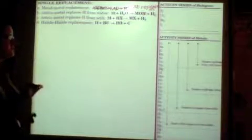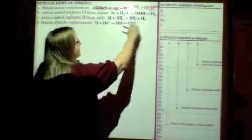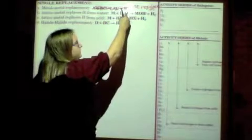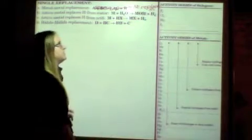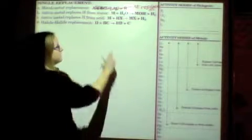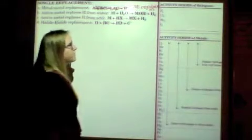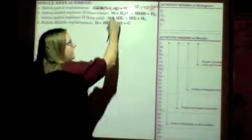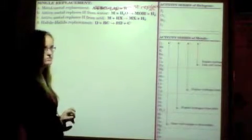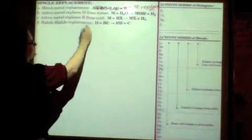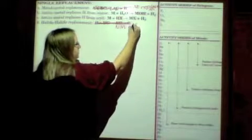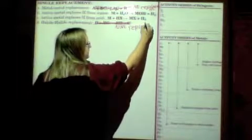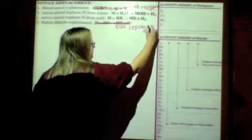B, just like decomposition, you're simply going to follow the guidelines. So if you have a metal reacting with water, it's going to form MOH plus H2 and replace the M. For C, same thing, M plus HX is going to produce MX plus H2. The X is any non-metal. And then this halide-halide replacement, again, don't worry about that. You just need to know that a non-metal replaces a non-metal.